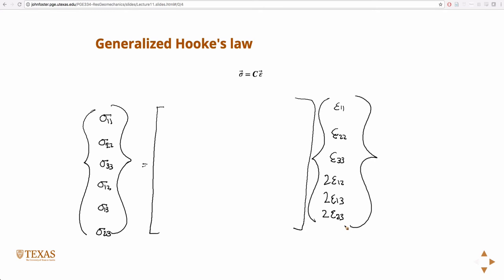But it turns out that, so we've already, just by writing it this way, we've assumed the symmetry of the stress tensor and the symmetry of the strain tensor. And it turns out there's another argument we can make due to thermodynamics, actually, that allows us to reduce, in general, this down to twenty-one independent components. Twenty-one independent constants.